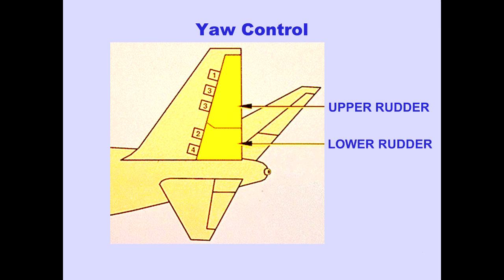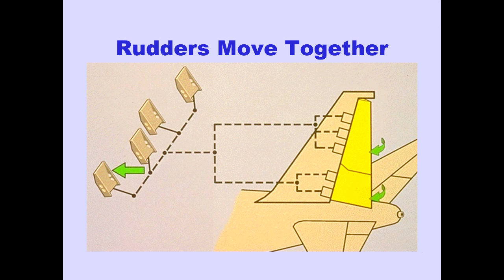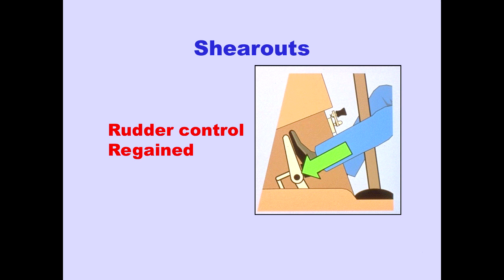Yaw control is provided by upper and lower rudders. Rudder power is supplied by all four hydraulic systems. Hydraulic systems 1 and 3 power the upper rudder, and systems 2 and 4 power the lower rudder. Pushing a rudder pedal deflects both rudders together in the desired direction. The mechanical system incorporates shear routes, which allow rudder control to be regained if a jam occurs and a significant manual force is applied to the rudder pedals.